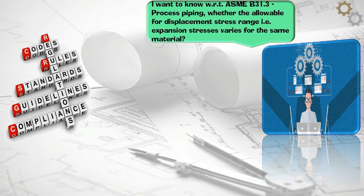ASME B31.3 process piping, whether the allowable for displacement stress range, that is expansion stresses, varies for the same material.